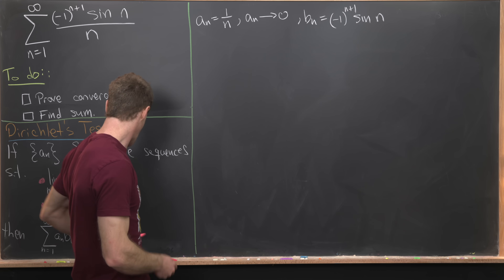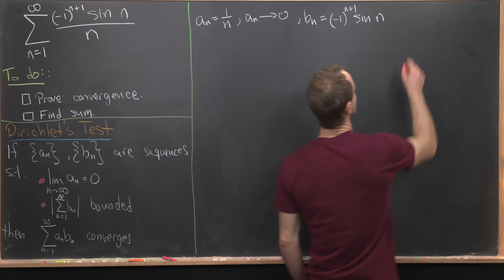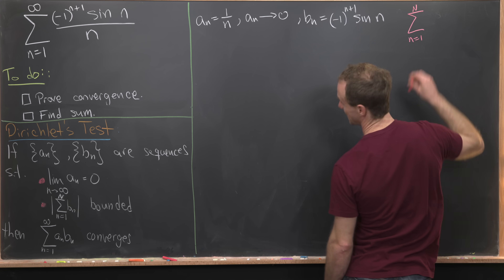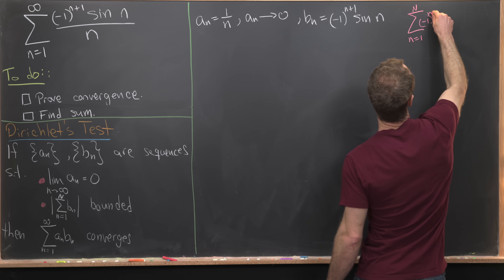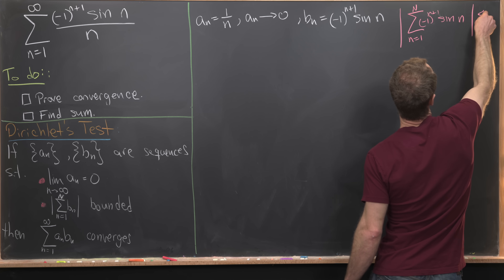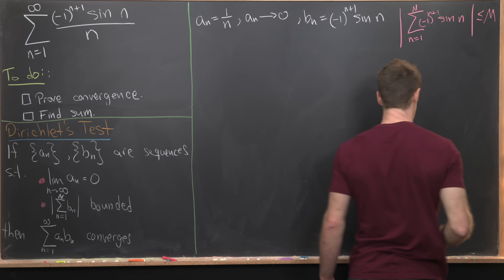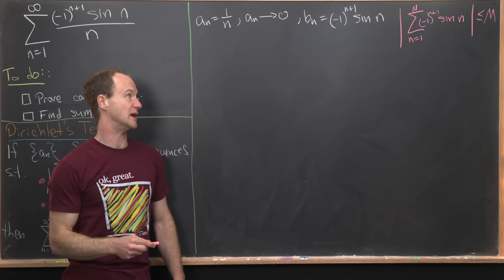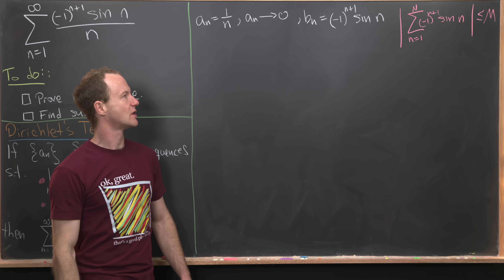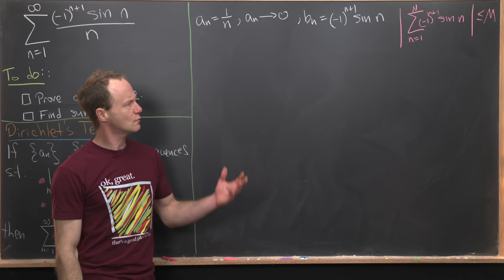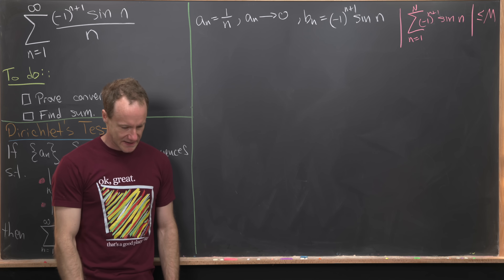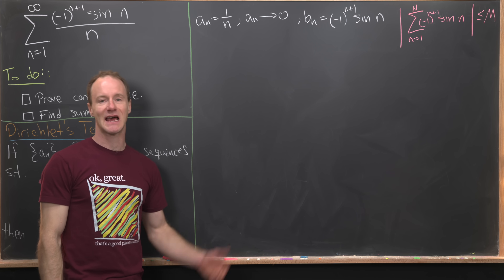Recalling our goal, what we want to show is that the sum as n goes from 1 to capital N of minus 1 to the n plus 1 times sine of n is bounded — meaning we put an absolute value around it and find some capital M that is always bigger than that in absolute value. What we'd like to do is take this sum and somehow write it so that we can see it as a telescoping series.